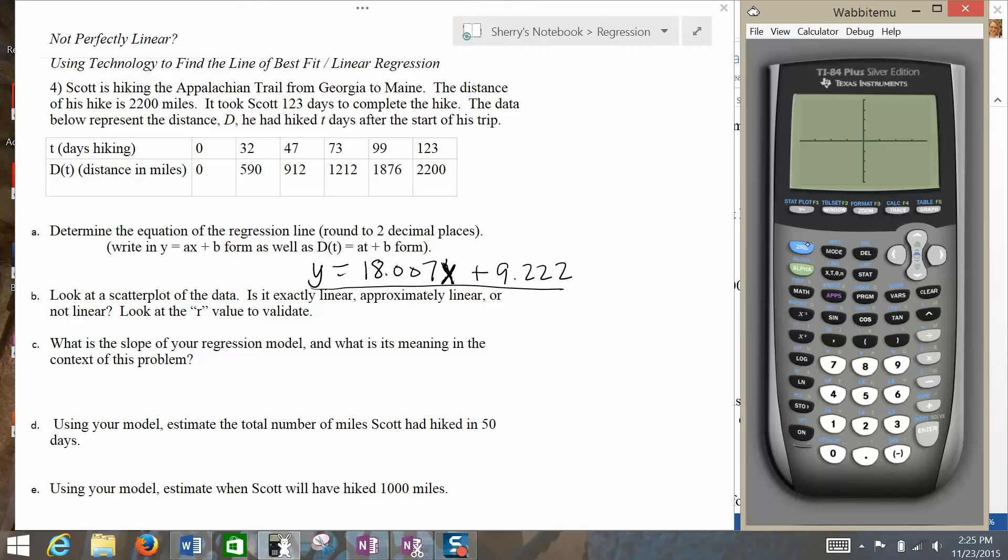If you click on Zoom Stat and nothing shows up, then sometimes you need to turn the stat plot on. We can turn on statistics plots by hitting second, Y equals, that brings up the stats plot menu. And then we can choose Option 1 here, we want to turn stats plots to on. And then we can go back and try to click on the graph button. We'll go to Zoom, Zoom Stat, enter.